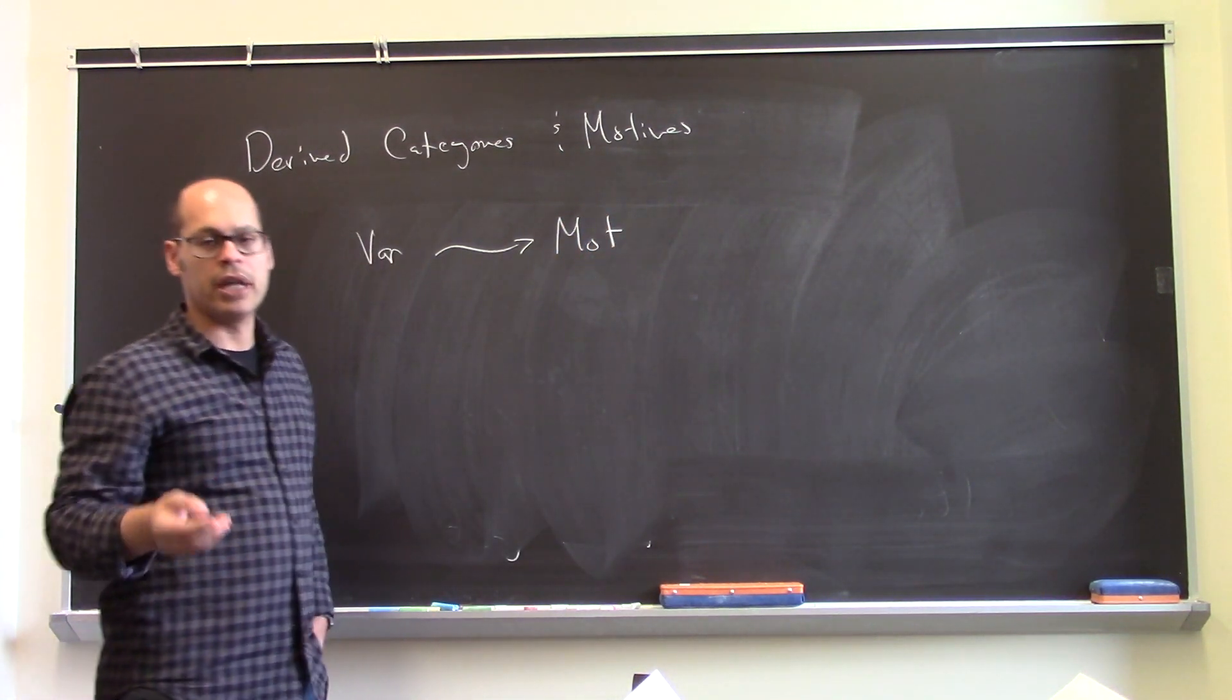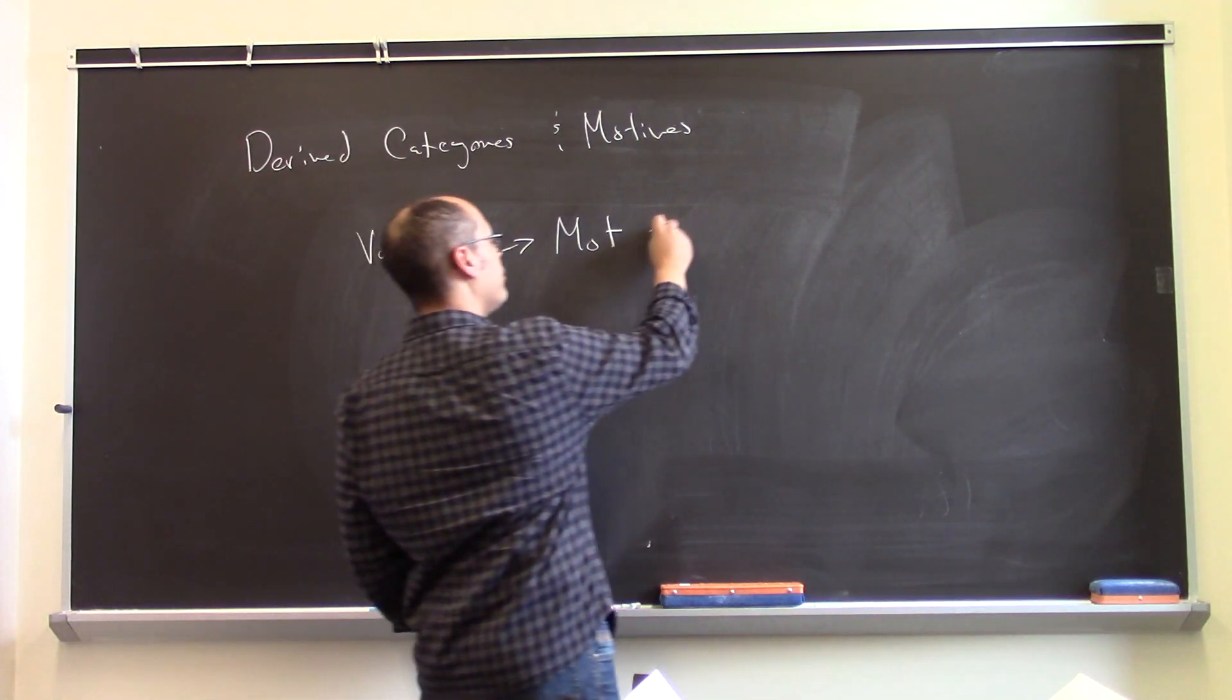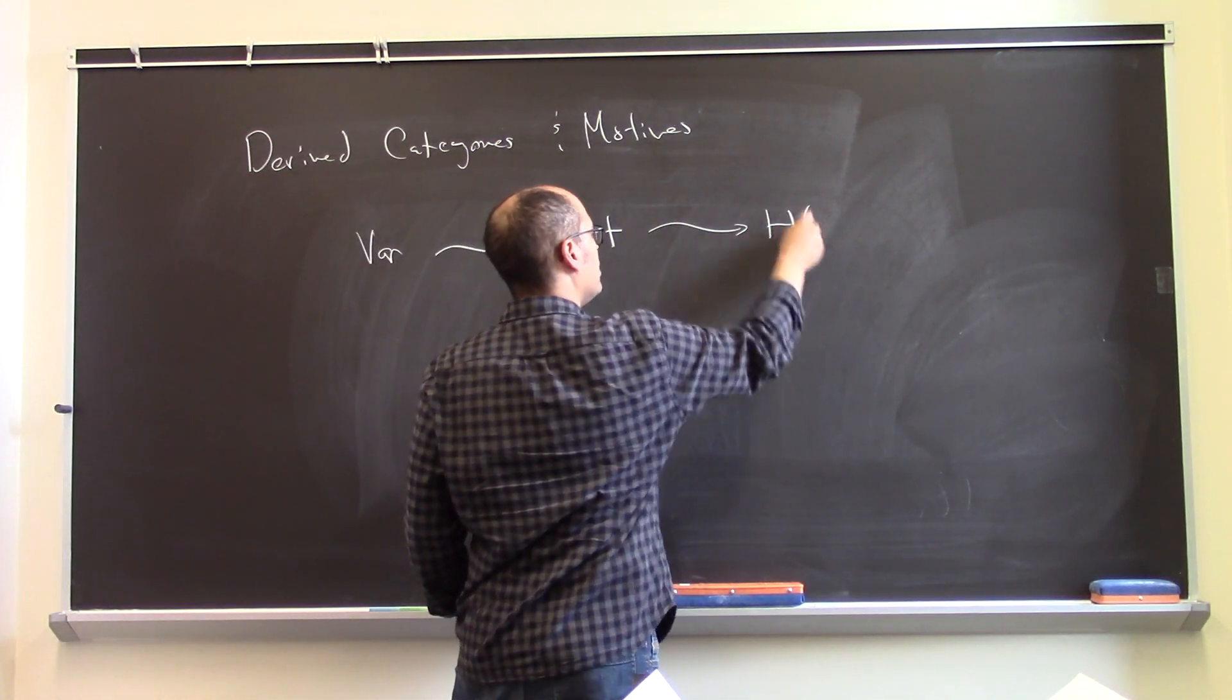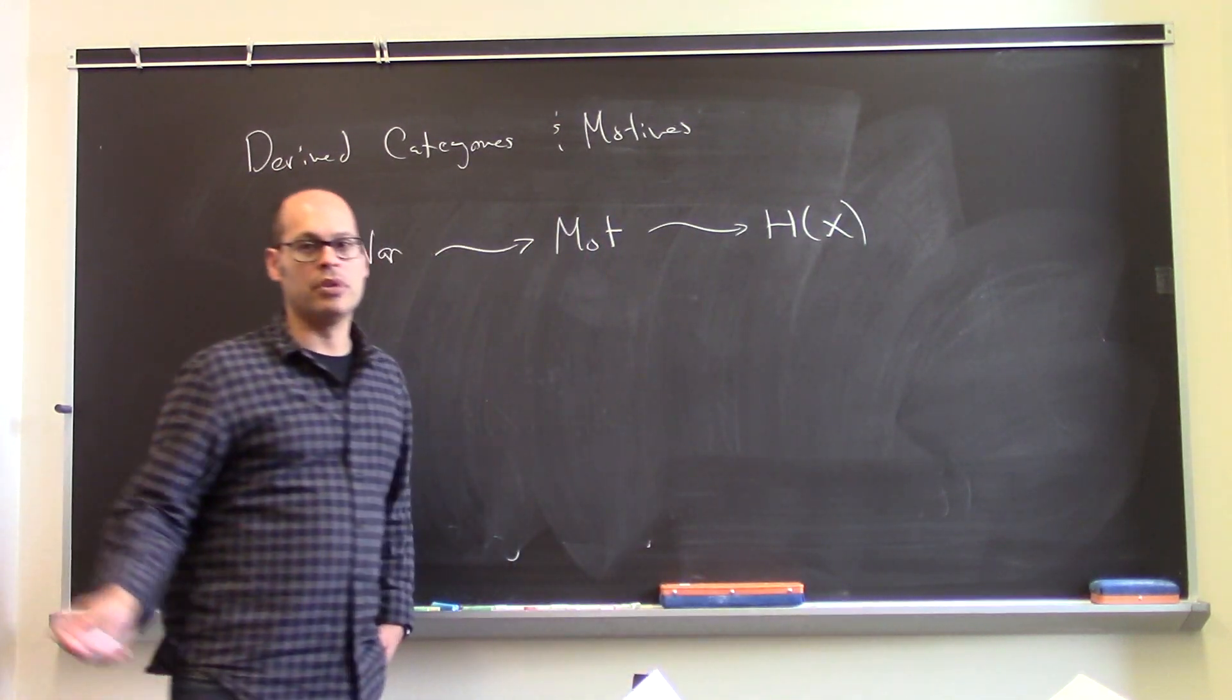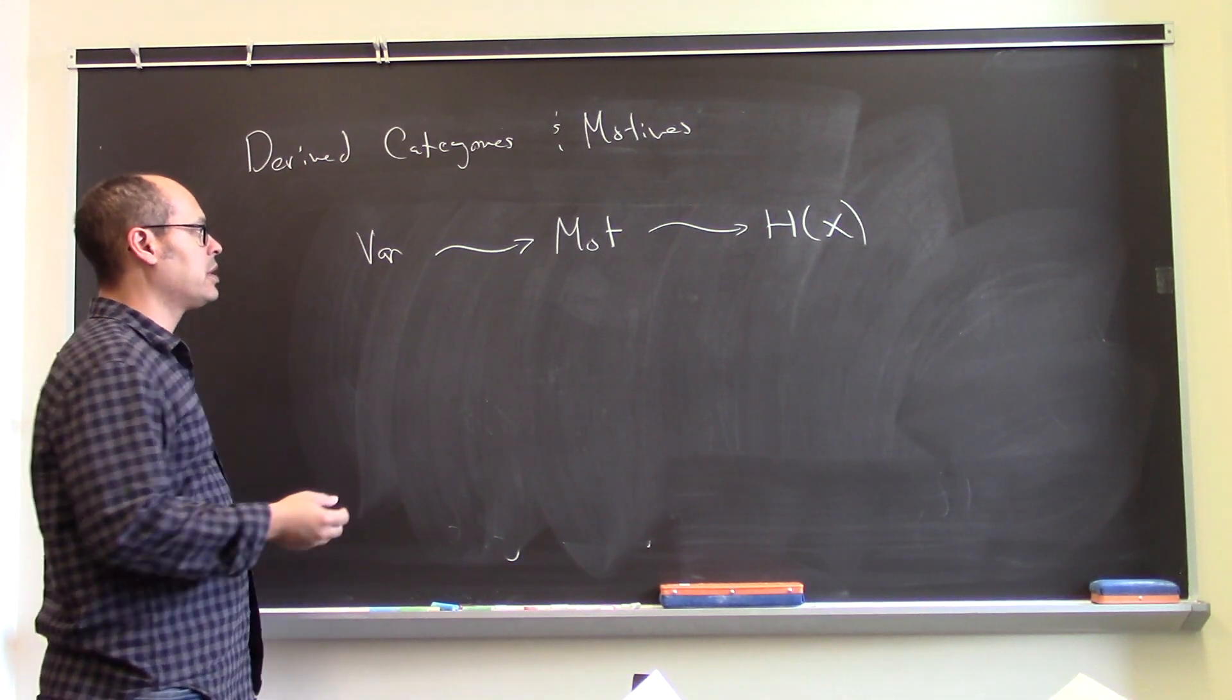you can stick in a variety and produce from it some sort of a motive. Of course, the category of motives is a conjectural thing, but let's just pretend. And then from the motive, you can compute some sort of cohomology, maybe Durham or l-adic or whatever you might be looking at.